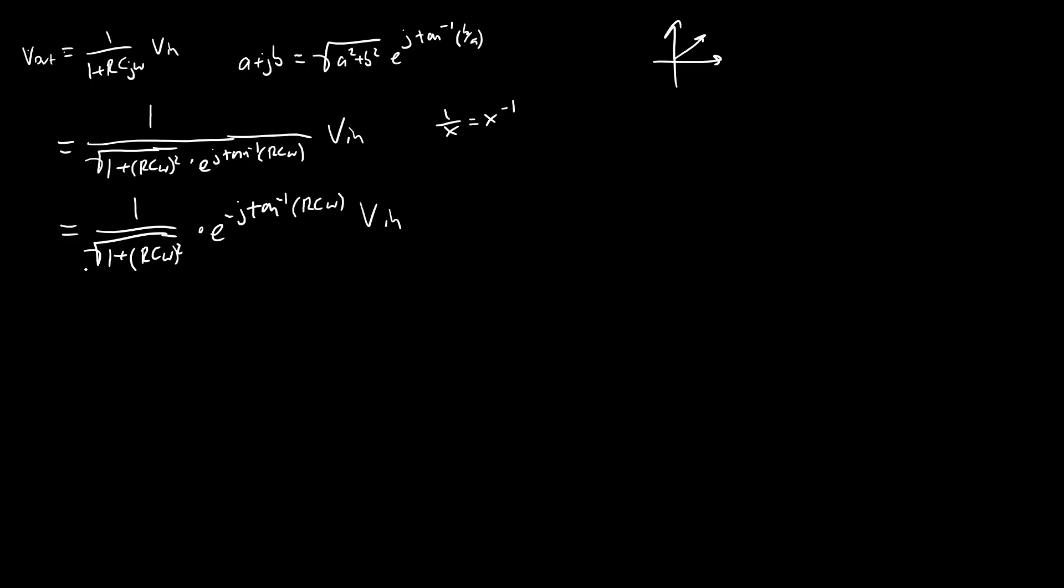So that is going to become 1 over the square root of 1 plus RC omega squared times e to the negative j inverse tangent RC omega times Vin. And what this gives us is a change in amplitude. So remember that this first part here, the j is gone. So this is just a real number and a change in phase again, related to that complex plane notation.